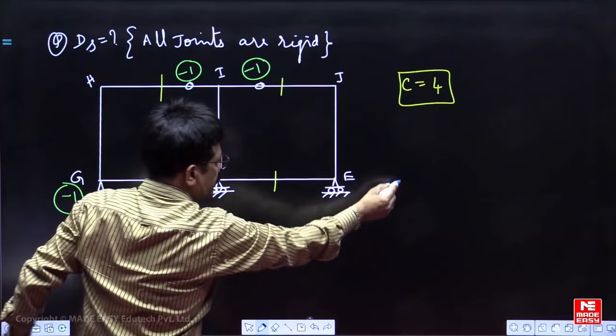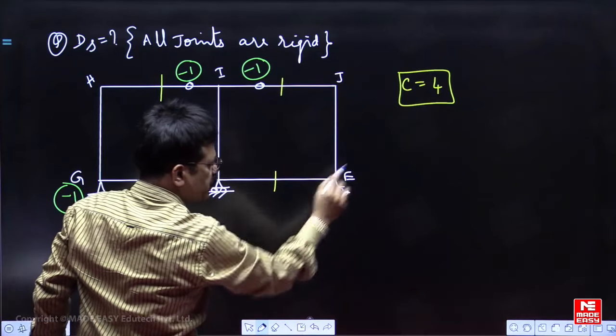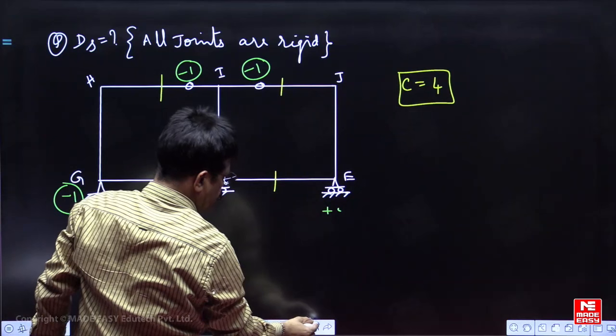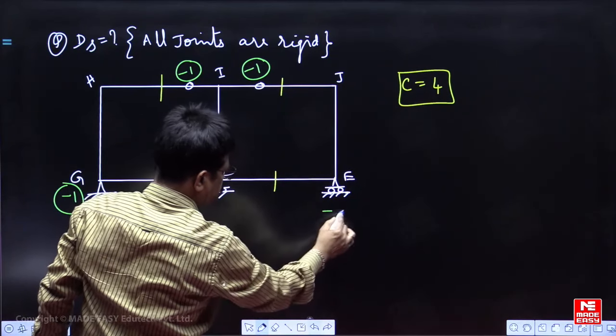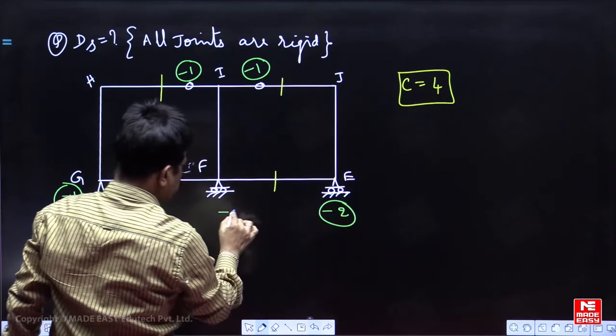This roller can translate and rotate, so to fix it, two reactions you are adding. So you subtract two here, here also you subtract two.